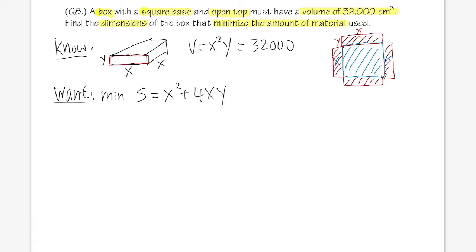Same thing here, though. We will have to divide both sides by x², and we get y equals 32,000 divided by x². Then plug in, and we get a surface area as a function of x: x² plus 4x times y, which is 32,000 over x².